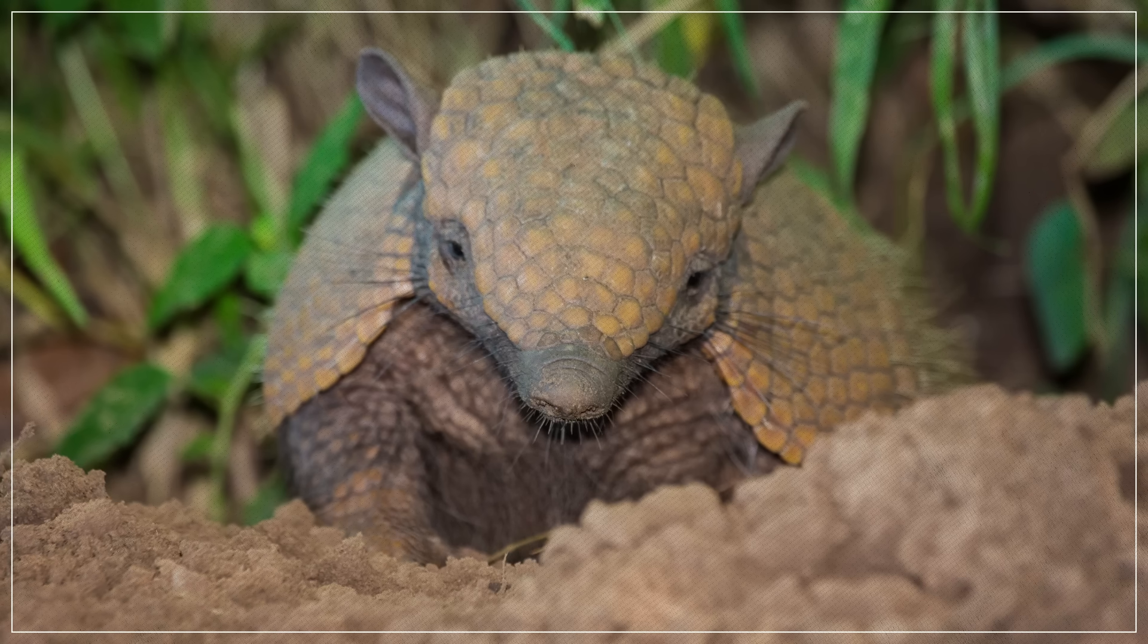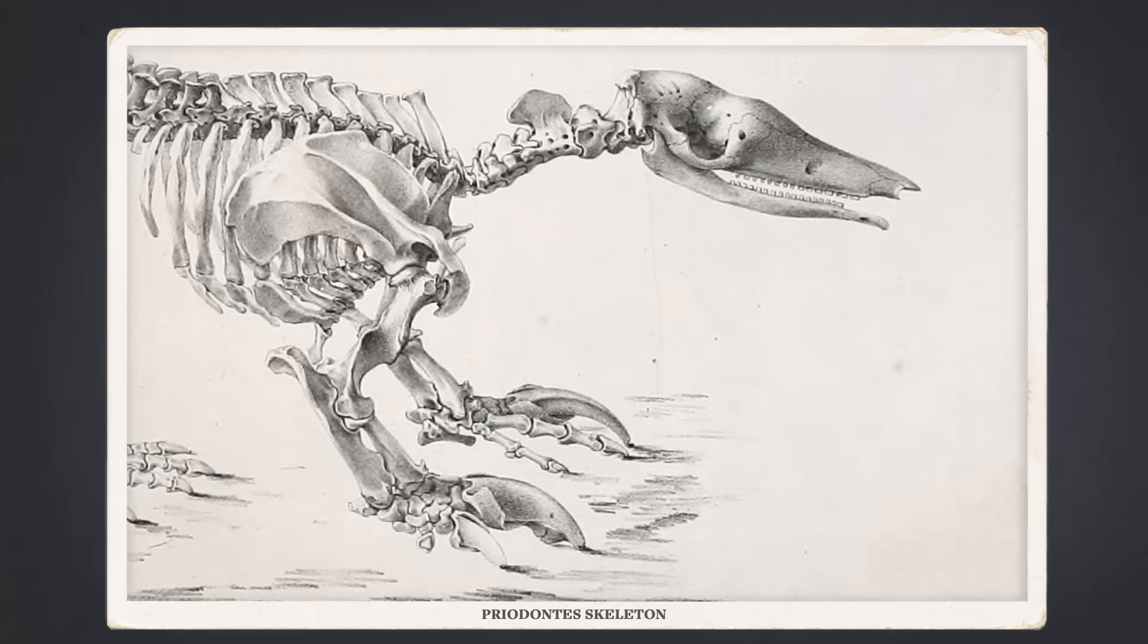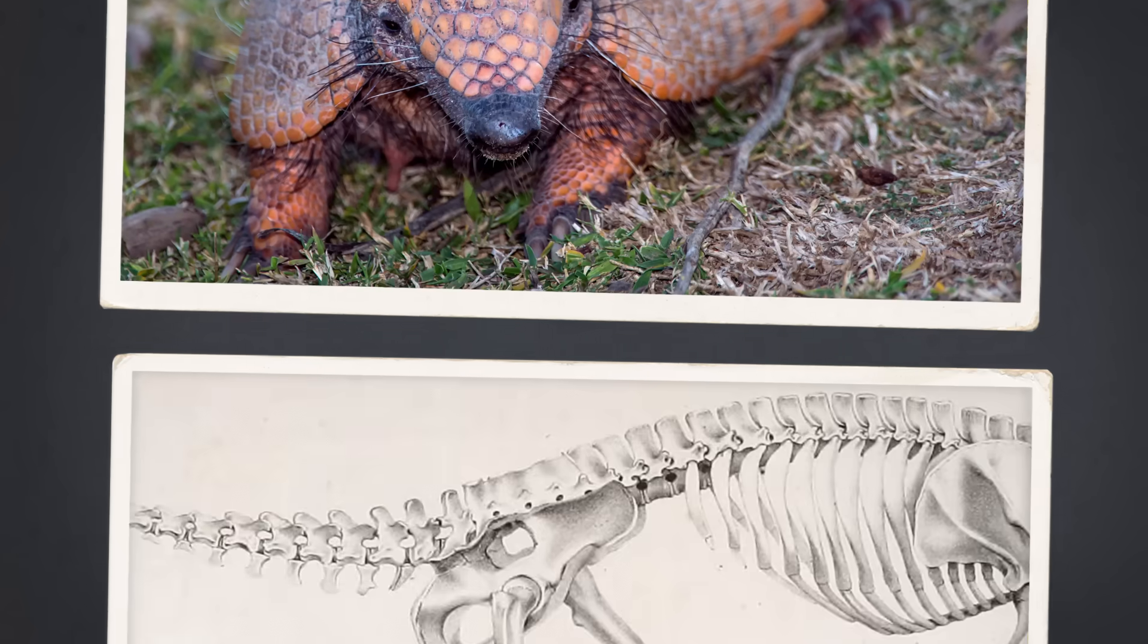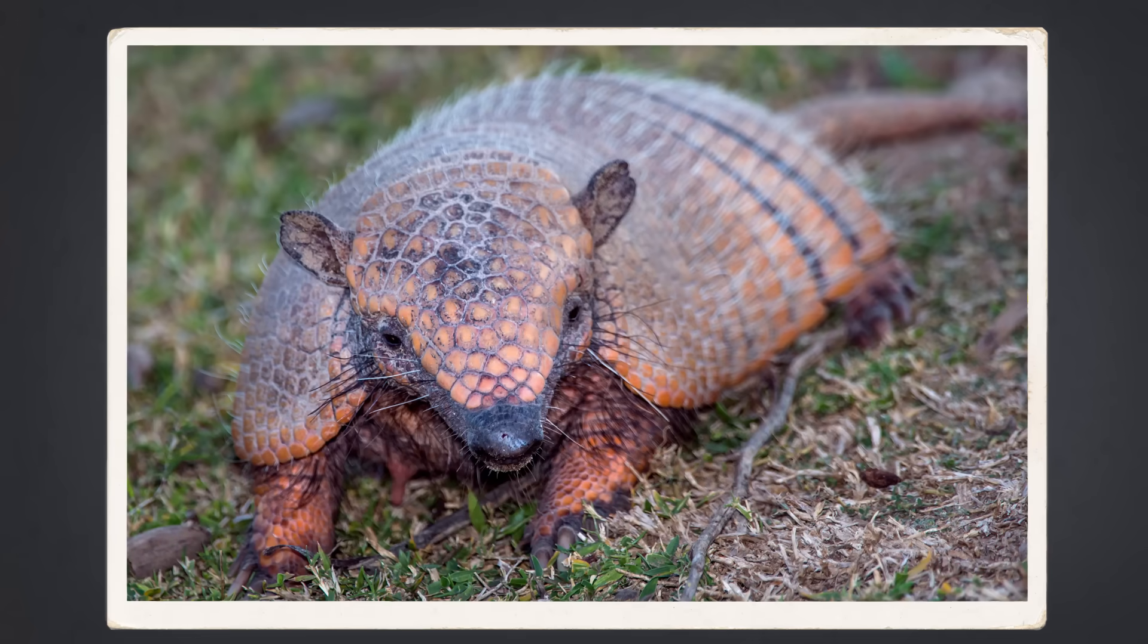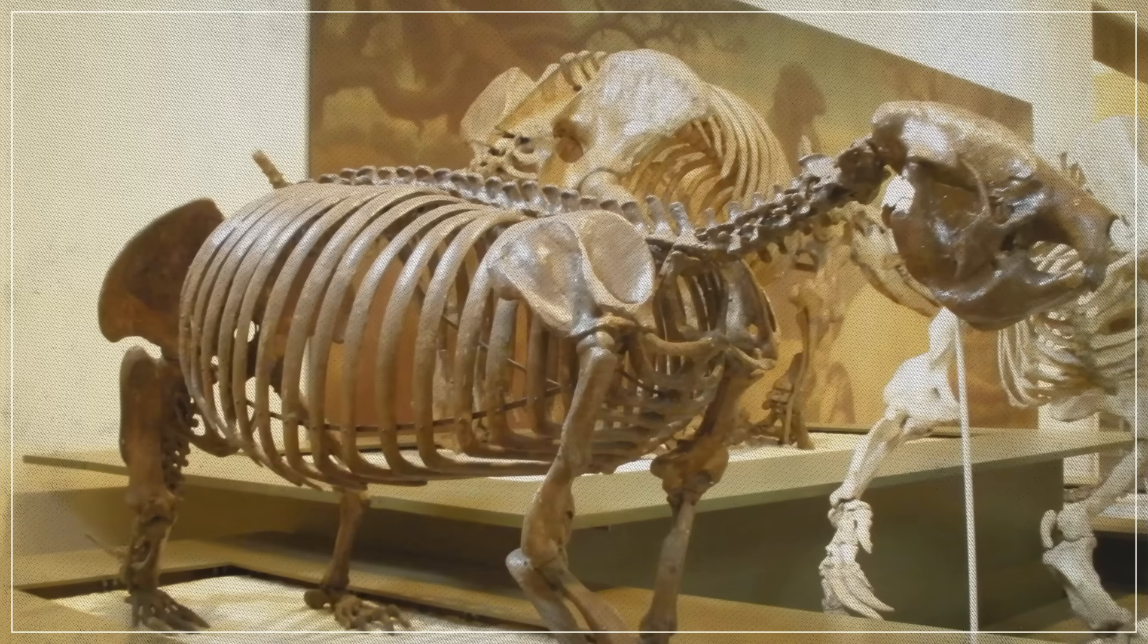We know this because all Xenarthrans share features that are perfect for burrowing. For example, they all have long, curved claws and extra contact points between their vertebra and their pelvis, which gives them a stiffer lower back to free up their front limbs for digging. But since the days of that common ancestor back in the Cretaceous period, Xenarthrans have crawled beyond the forest floor and into many other ecosystems.